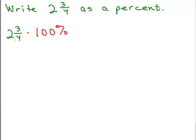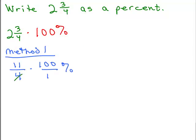One way is they rewrite 2 and 3 fourths as an improper fraction. So this is method one. I could write that as 11 fourths times 100 percent. And then cancel, and then I've got to do 11 times 25, and that's going to be 275. Remember your percent sign. So 2 and 3 fourths from method one says the answer is 275 percent. And that seems reasonable because it's more than 200 percent, right? But less than 300 percent, right?